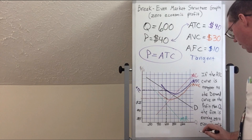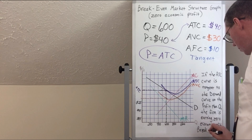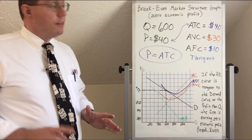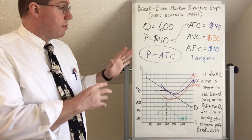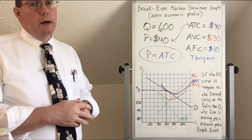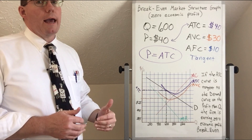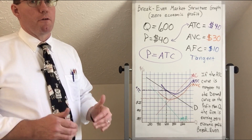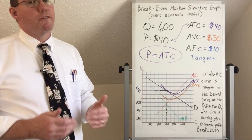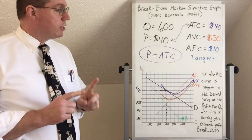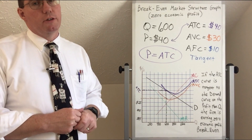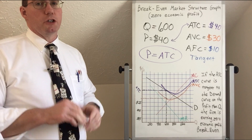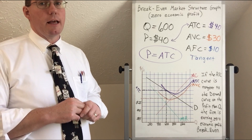That means this firm is breaking even — earning zero economic profit. If you're interested in understanding this further, look up the question: 'Why must ATC be tangent to the demand curve for zero economic profit?' You'll find interesting mathematical and economic explanations for why the average total cost curve must be tangent to the demand curve to show a firm earning zero economic profit. We'll do just one or two more things before we move into understanding the market structures.